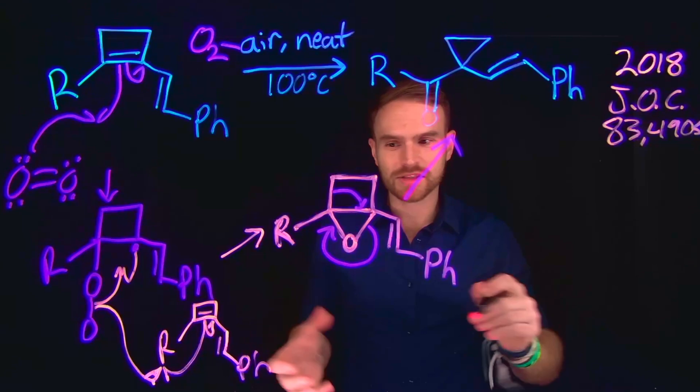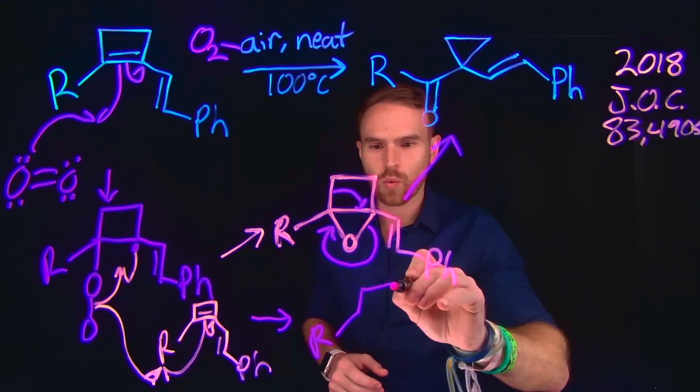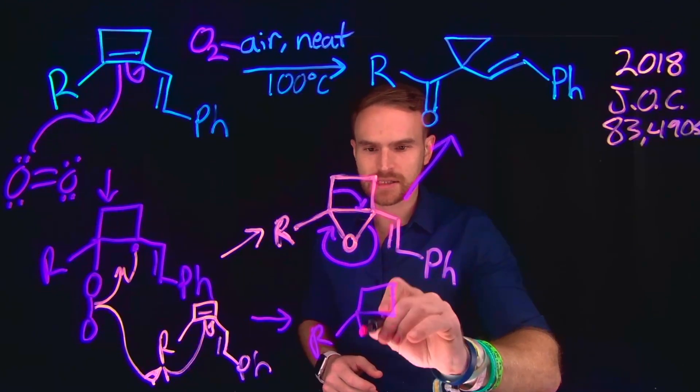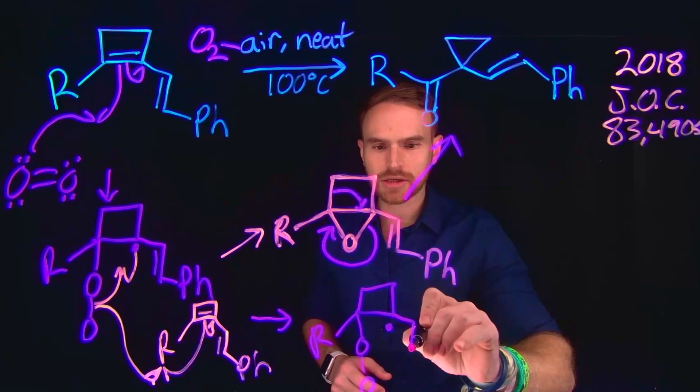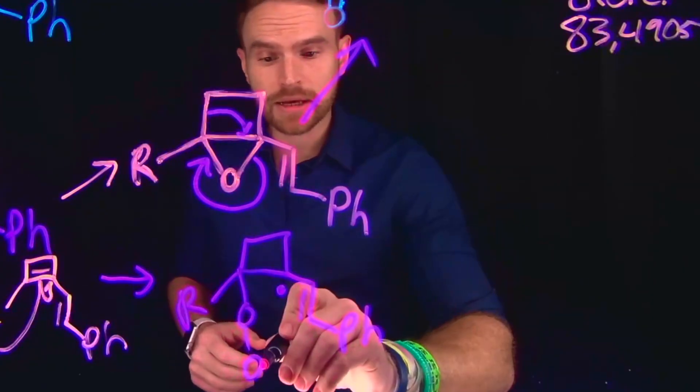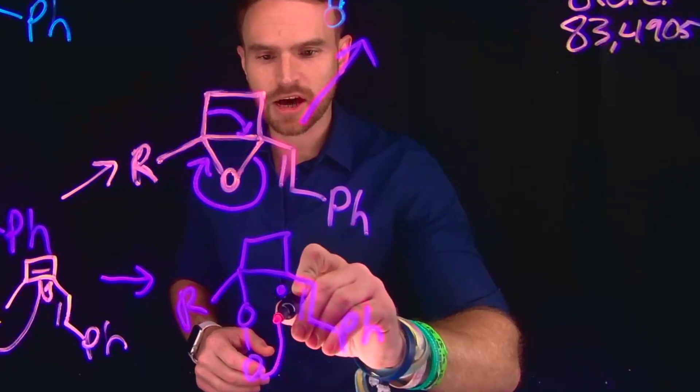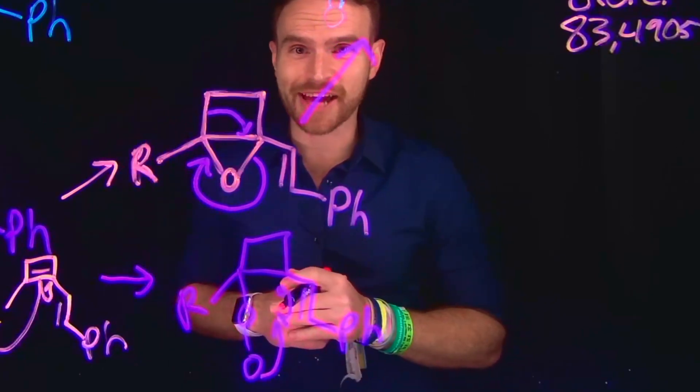Now what's interesting about this reaction is it's not the only product that is formed. In fact, when we generated this species where we have our radical, we actually can get another product as well. Because what can happen from here is one of these electrons can come and combine with this other electron to form a new four-membered ring with two oxygen atoms.